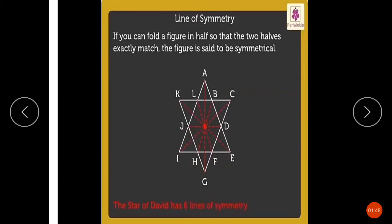This Star of David has six lines of symmetry. So we can say that the Star of David has six lines of symmetry.